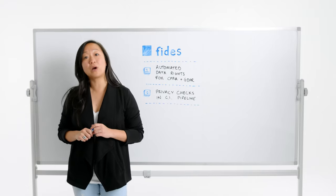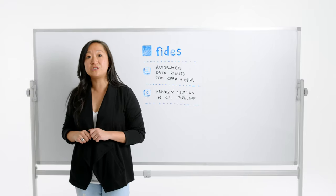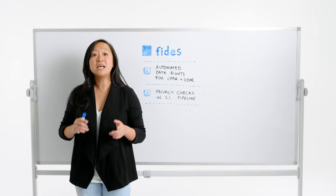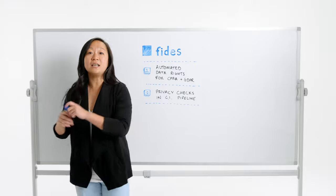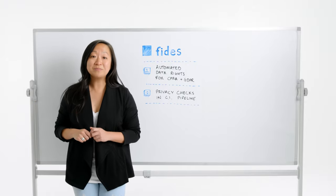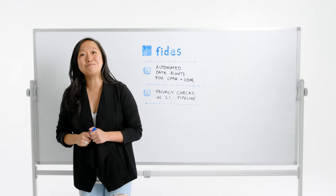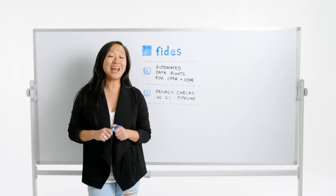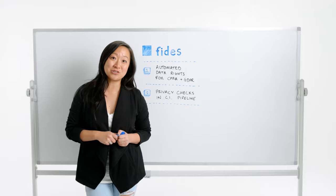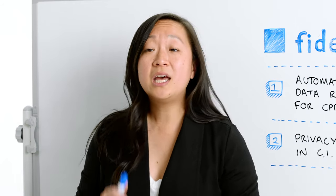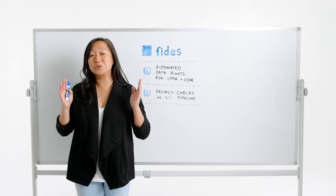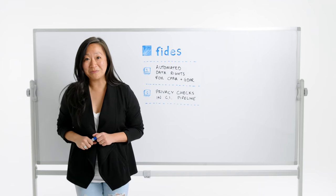The FIDAS toolset tracks privacy-related changes to your systems in version control, and enforces policies in both your source code and your runtime infrastructure. By allowing for privacy checks at the time your software is built or deployed, your team can focus on what they do best, which is build great software.